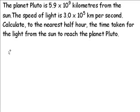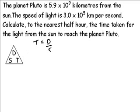So we need to use the formula for time in this calculation and we take that from the triangle containing d, s and t. If we cover up time with our finger that leaves d and s, so that tells us that the formula for time is equal to distance divided by speed.